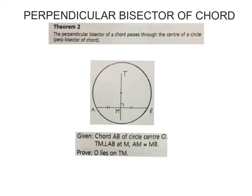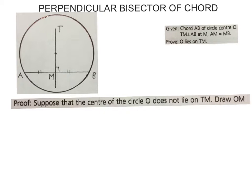Then you are asked to prove that O lies on this line. Your proof starts here. You say: suppose that the center of the circle O does not lie on TM. Draw OM, where O is the center of the circle.